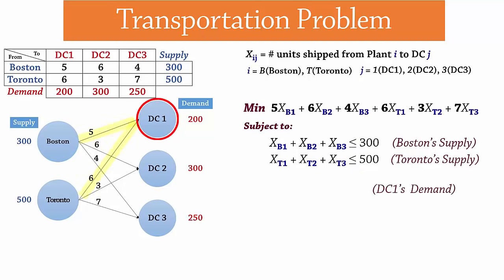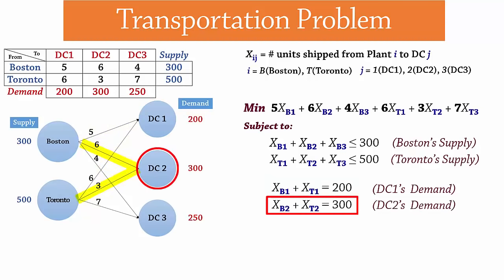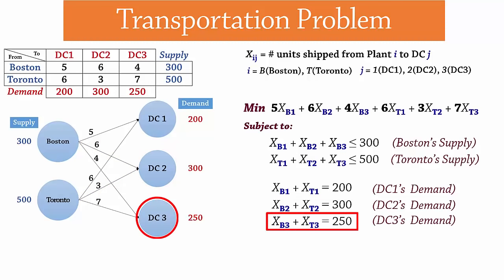For DC1 node, we write, XB1 plus XT1 equals 200. Equality is used because we have a demand here that must be met and we have enough supply to meet it. Similarly, for DC2, we have XB2 plus XT2 equals 300. And for DC3, we have XB3 plus XT3 equals 250.